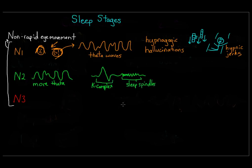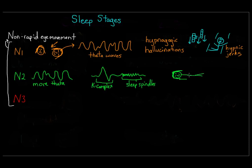Sleep spindles are bursts of rapid rhythmic brain activity. There's a lot we don't know about the purpose of each sleep stage, but some researchers think that sleep spindles help inhibit certain cognitive processes or perceptions so that we maintain a tranquil state during sleep. For example, sleep spindles in some parts of the brain are associated with people's ability to sleep through loud noises.